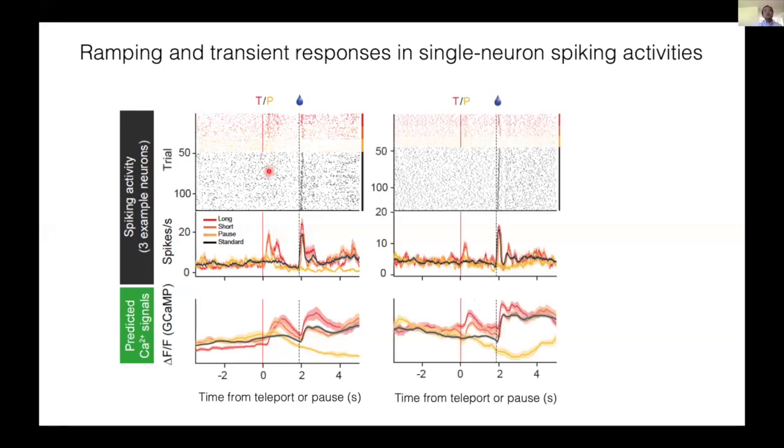Although the population average ramped up, we also found that some dopamine neurons ramped down. Interestingly, these dopamine neurons that showed a negative ramp also showed a transient response in response to the teleport, a signature of reward prediction error.